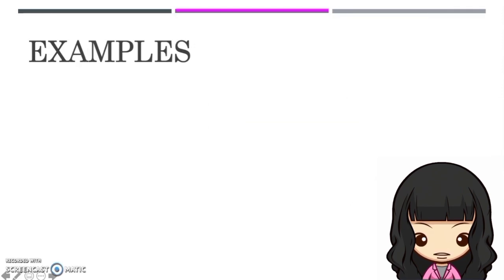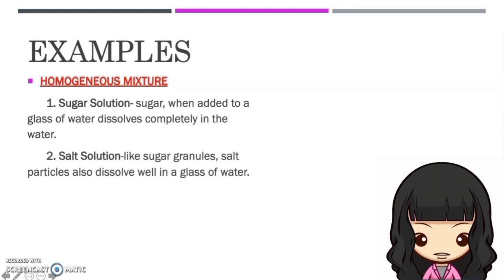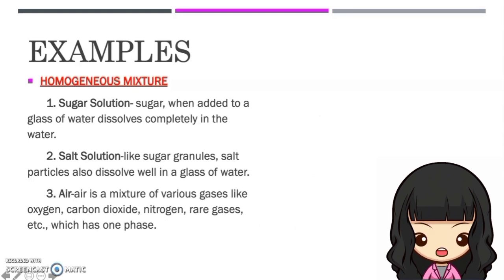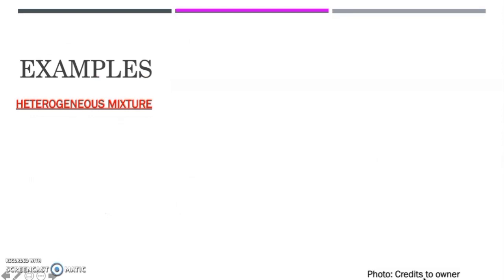Let's look more into the difference between homogeneous and heterogeneous mixture and take up their examples. For homogeneous mixture, we have sugar solution — sugar, when added to a glass of water, dissolves completely in the water. We also have salt solution: like sugar granules, salt particles also dissolve well in a glass of water. We also have air — air is a mixture of various gases like oxygen, carbon dioxide, nitrogen, rare gases, etc., which has one phase. While in heterogeneous mixture, we have the following examples.